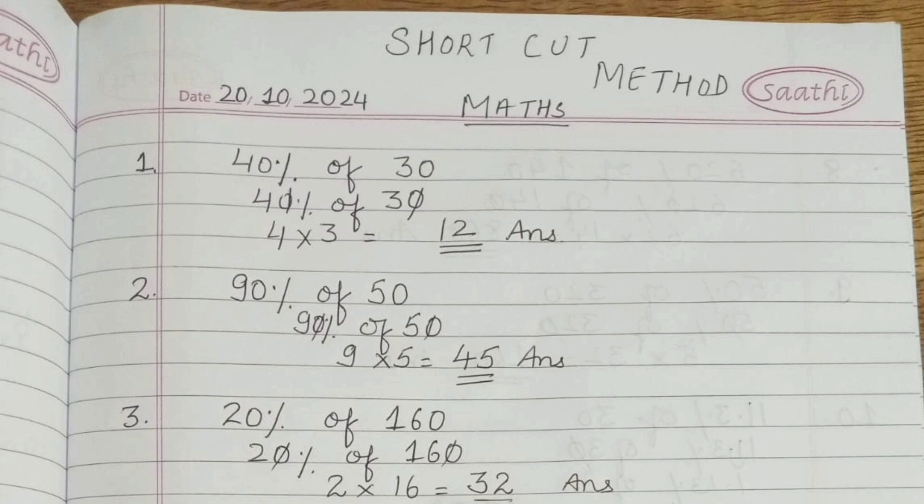Then 20 percentage of 160. Cut the zeros from both sides - from 20 and 160. You will get 2 into 16. Multiply 2 by 16, and the answer is 32.